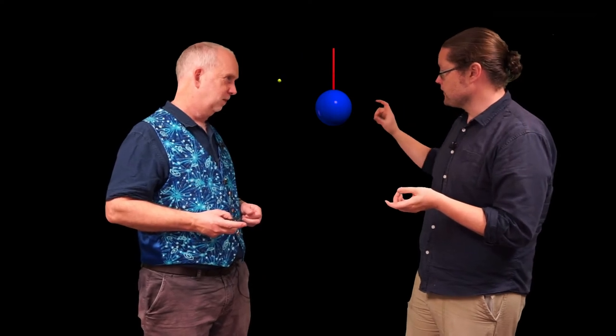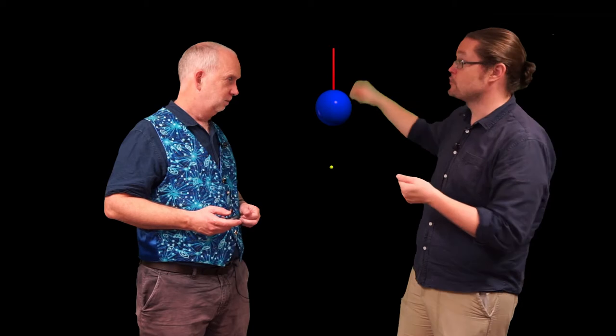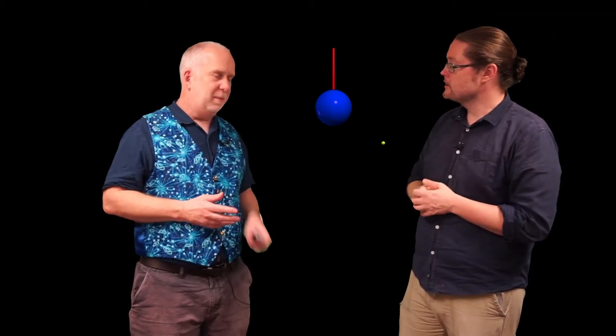Now, you said that gravity falls off as one over r squared, so the further away we are, it falls off as the square of that distance. So that means that when you're in a low Earth orbit, only just above the thickest part of the atmosphere, you have to go pretty fast to overcome the gravity, because the gravity is pretty strong.